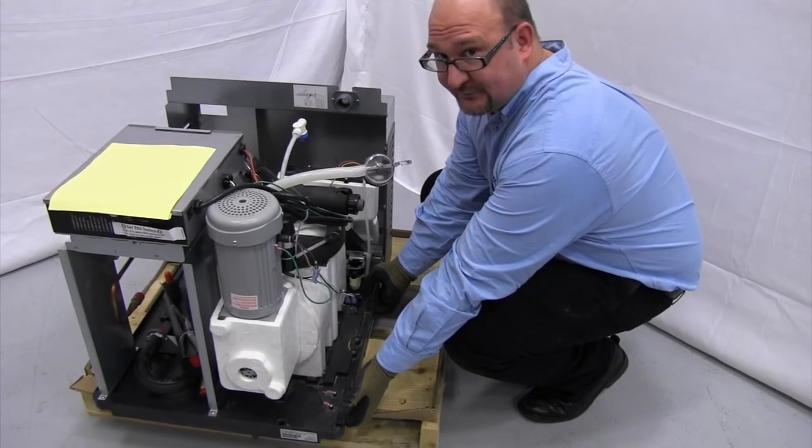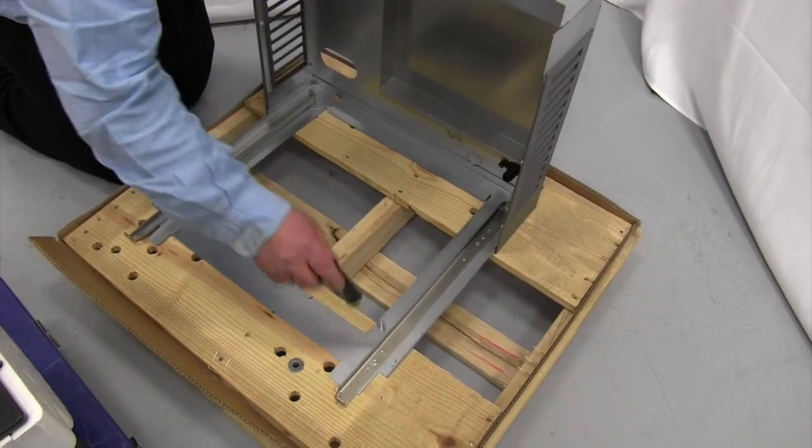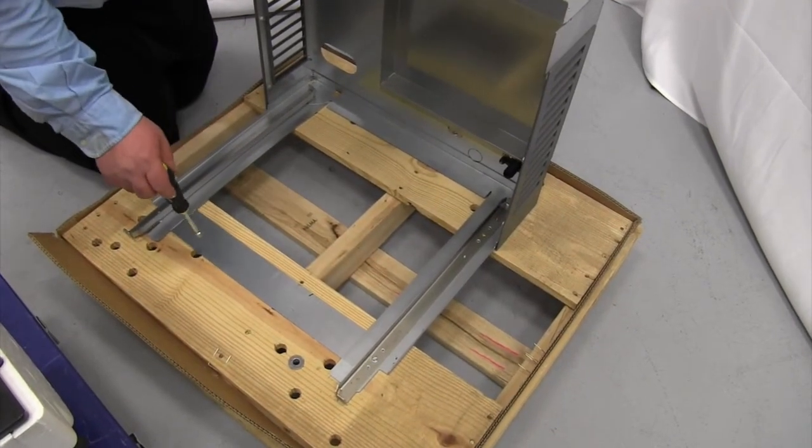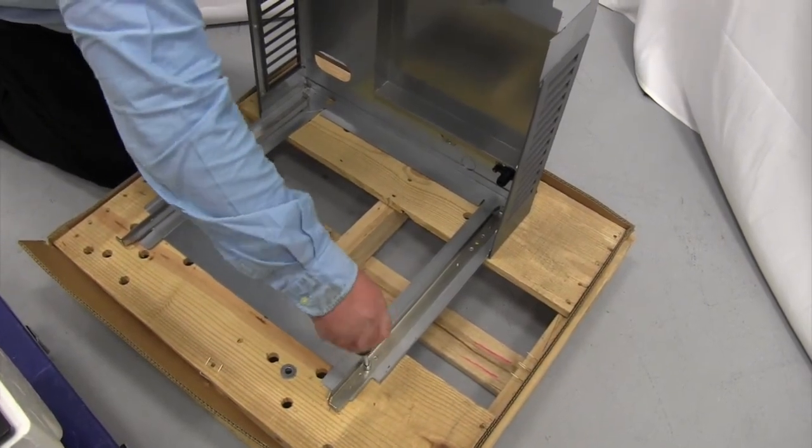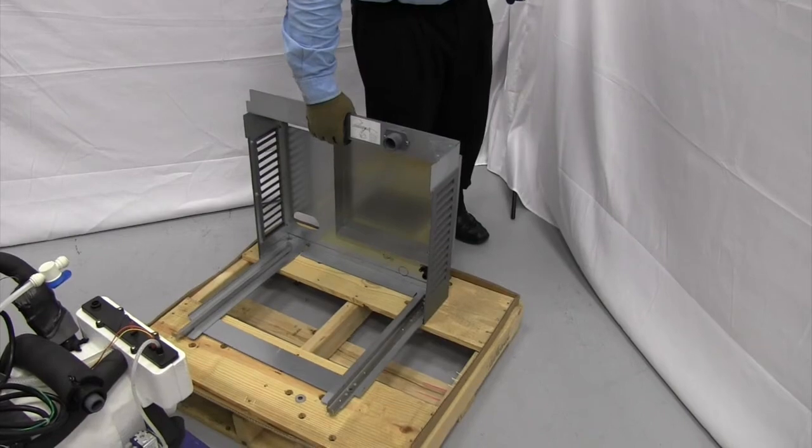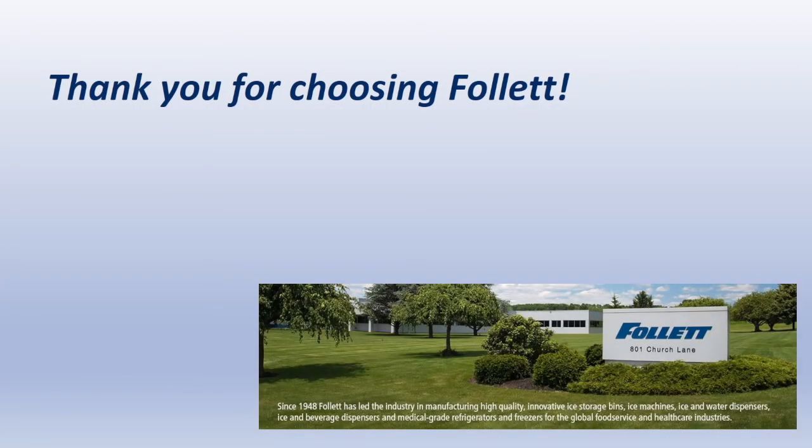There's two wood screws that hold the louvered docking station to the pallet. We're going to remove those screws. Now we can remove the louvered docking station from the pallet.